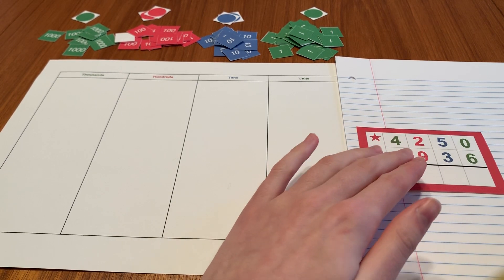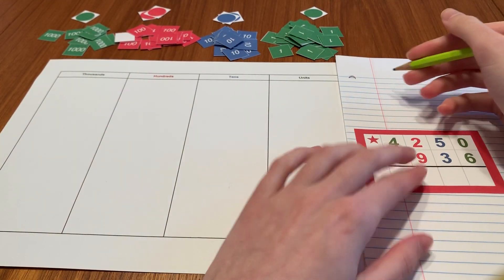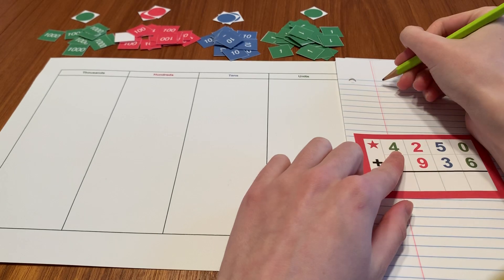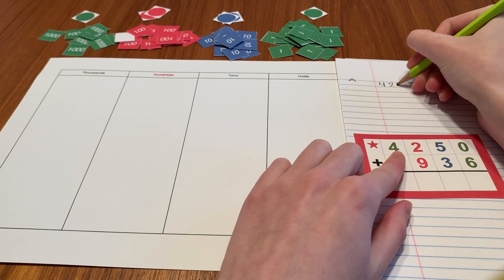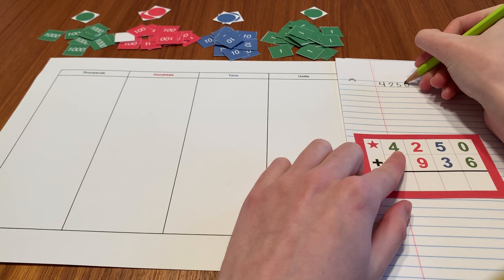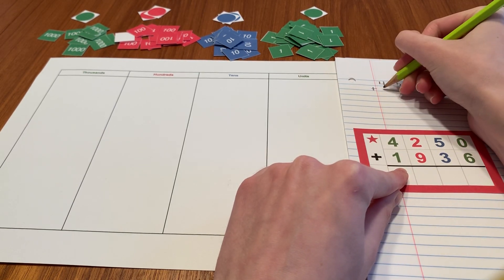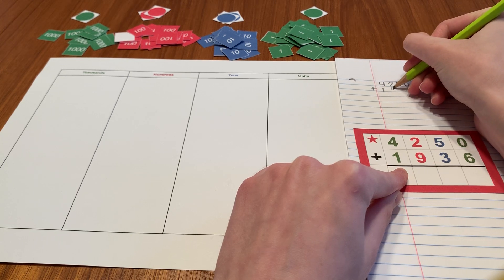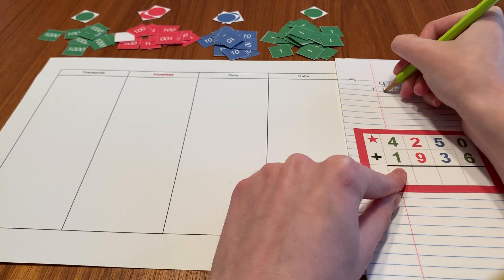So we're going to start by writing this problem on this paper. Four thousand two hundred fifty plus one thousand nine hundred thirty-six. And then I draw this line here.